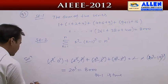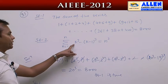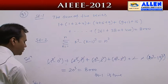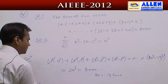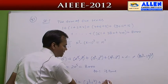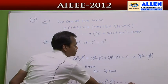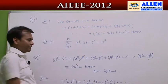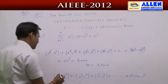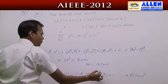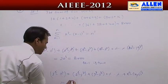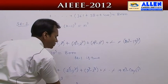Now for Statement 2: the summation of (k³ − (k−1)³). Putting k = 1 gives (1³ − 0³); k = 2 gives (2³ − 1³); k = 3 gives (3³ − 2³); and k = n gives (n³ − (n−1)³). Again, intermediate cubes cancel — 1³ cancels, 2³ cancels, 3³ cancels, and so on — leaving just n³. So Statement 2 is also true.